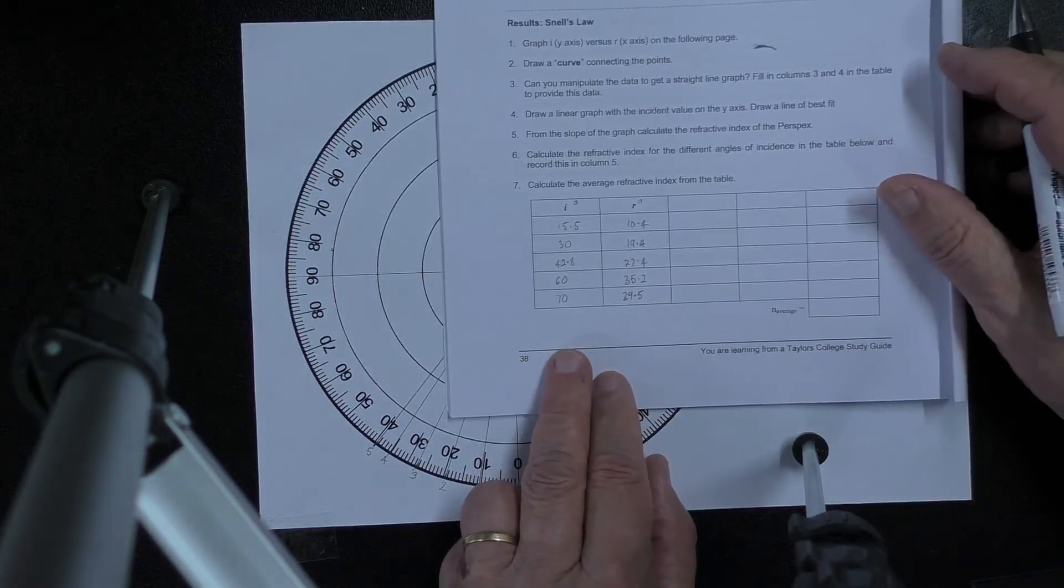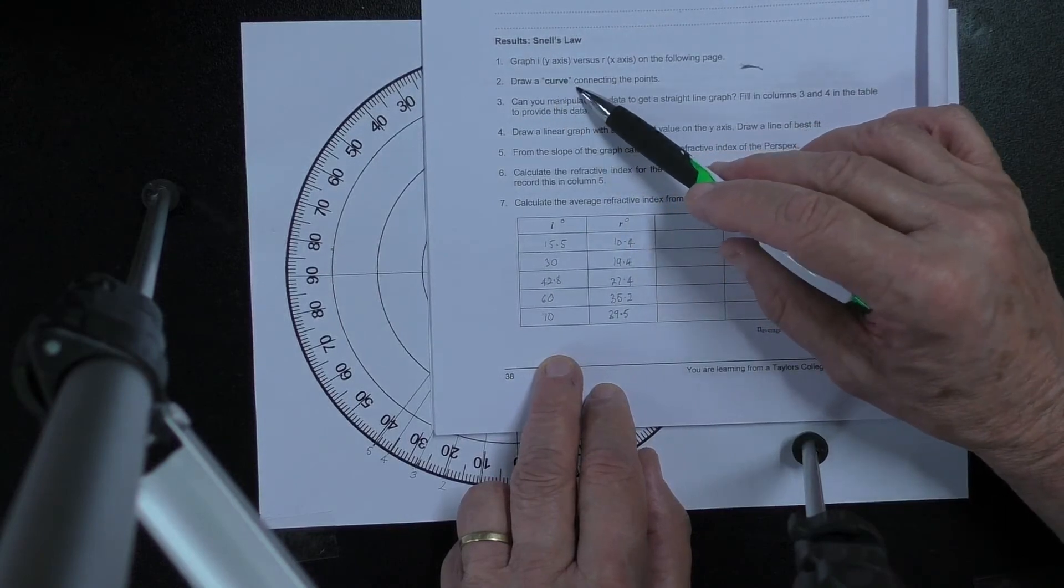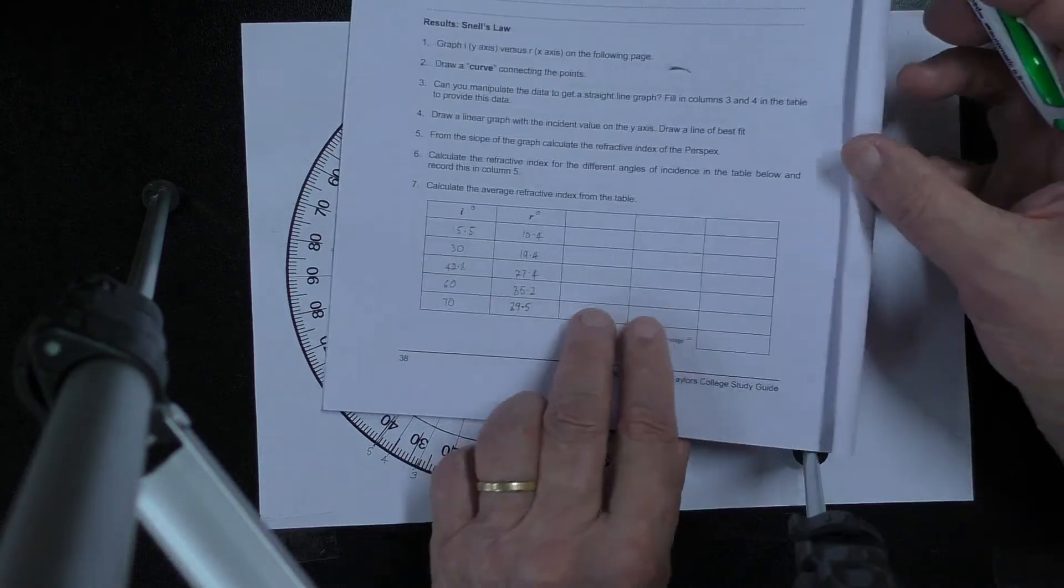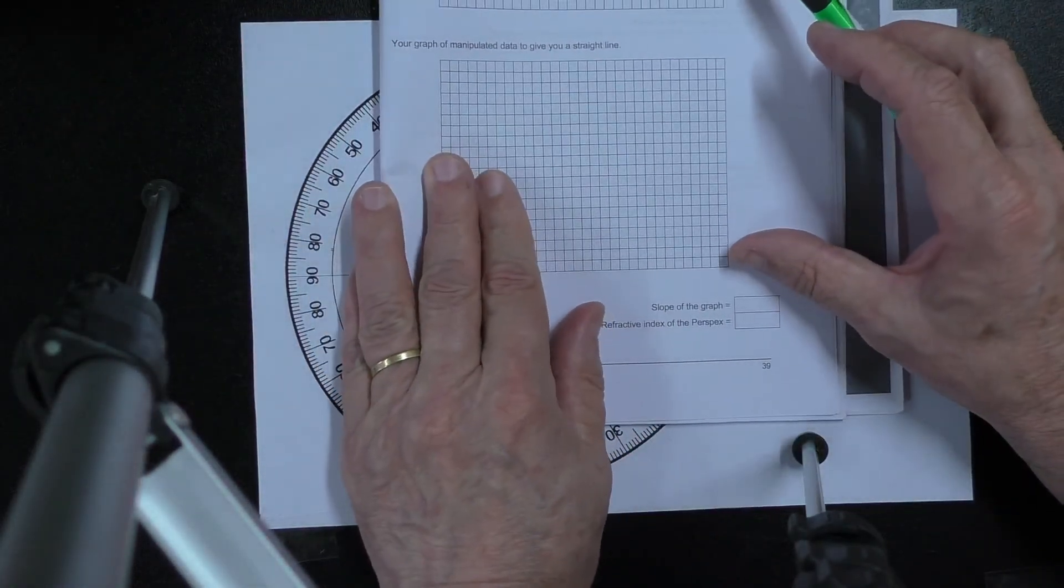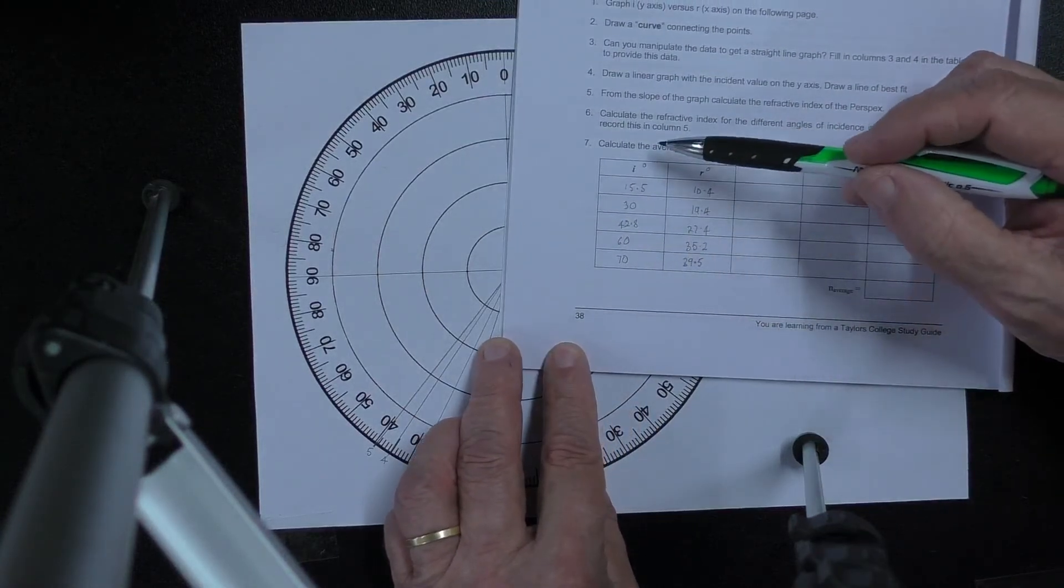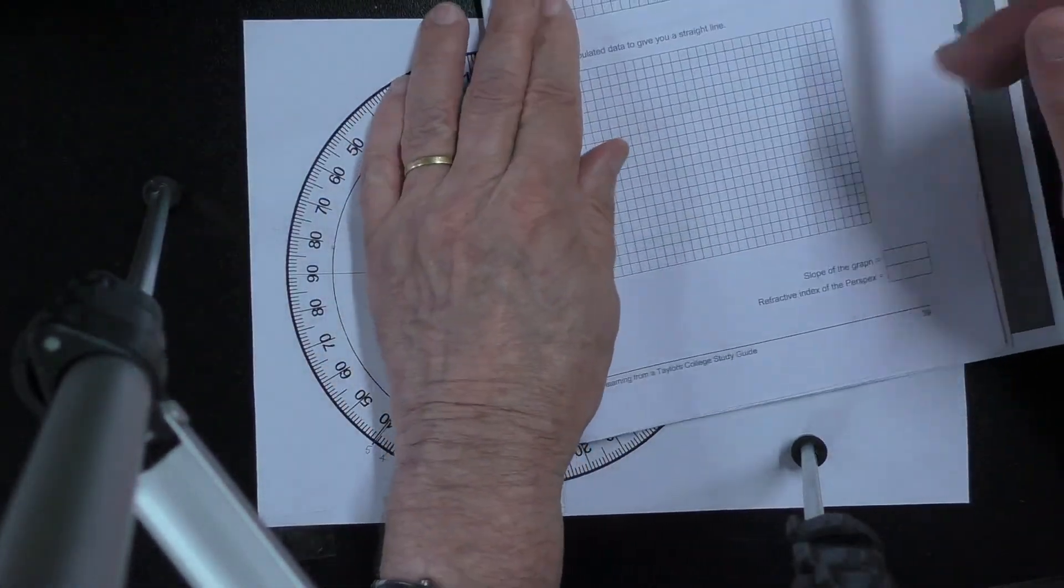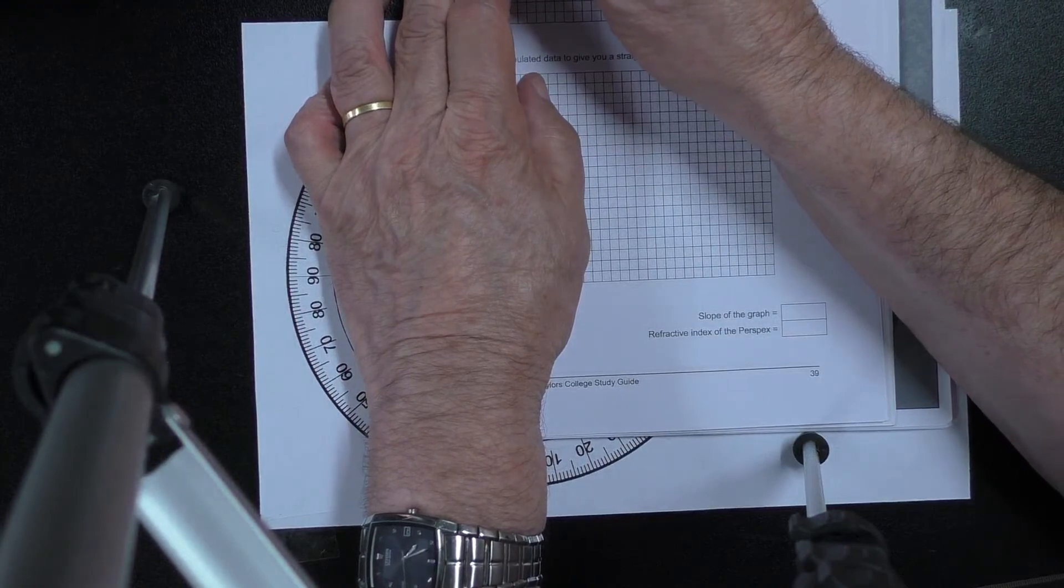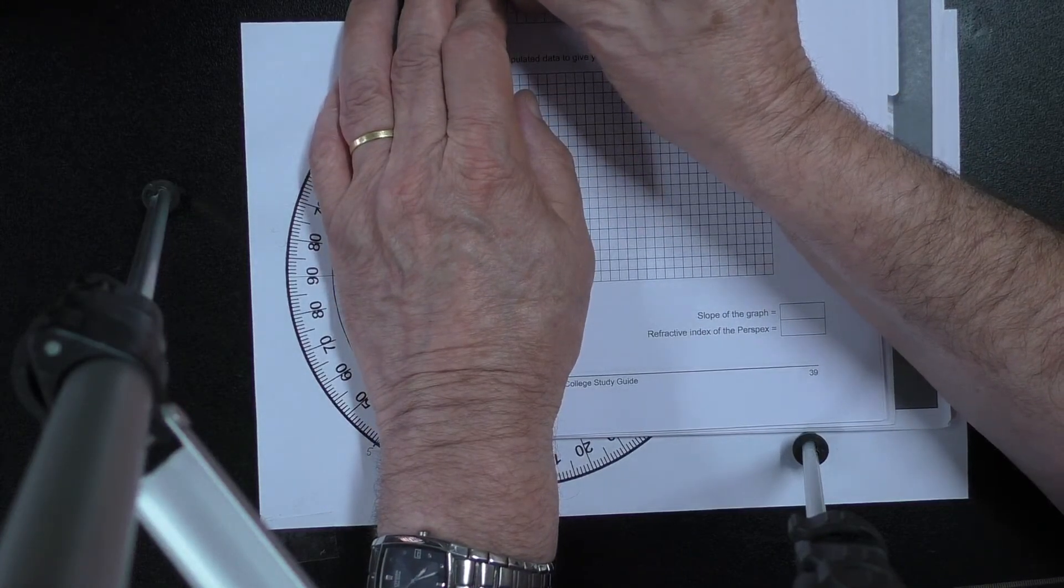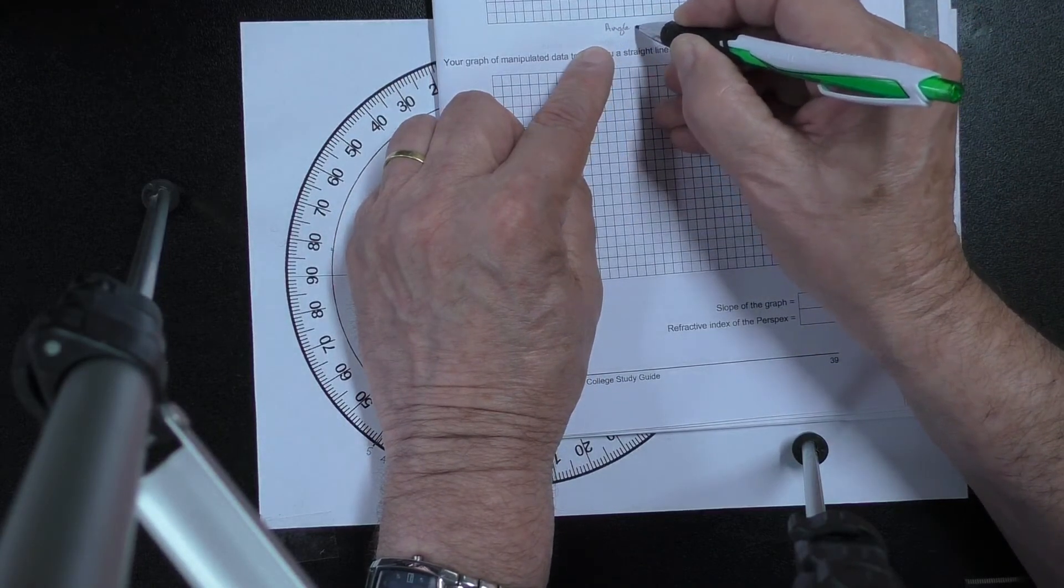Now the next thing it says here is can you manipulate the data to get a straight line graph. This is after we've drawn a curve. Graphing these results, the angle of incidence against the angle of refraction. So now that I've recorded all the angles, my next job is to graph the angles of incidence against the angles of refraction. Over here I would put angle of incidence and I would put in here the units, degrees.